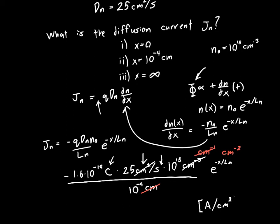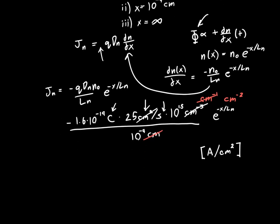And this is a current density, so we'd expect it to be in units of current per area. And this is exactly what we get. So we're assuming that we did everything right to this point.